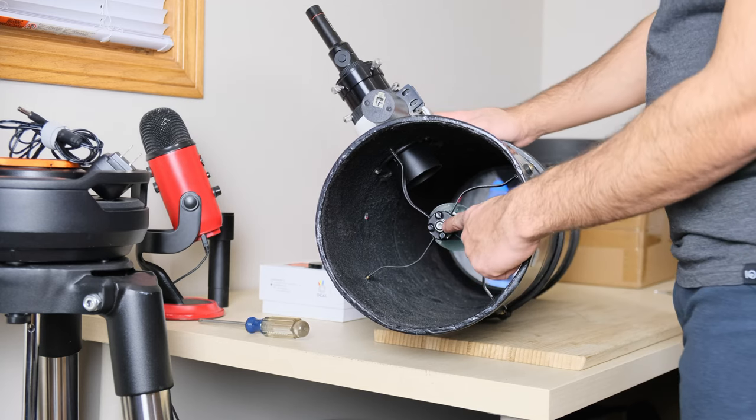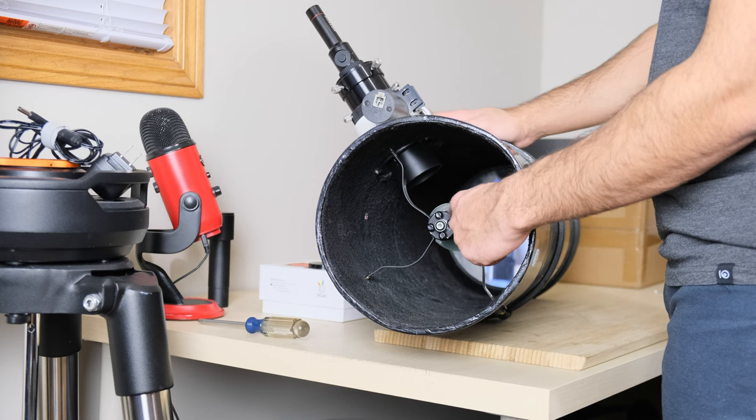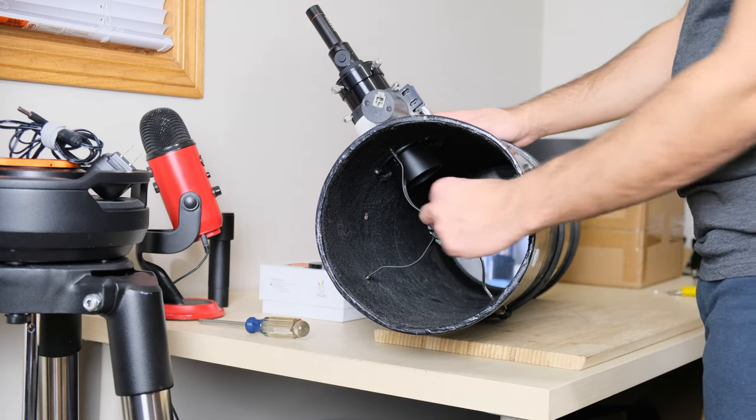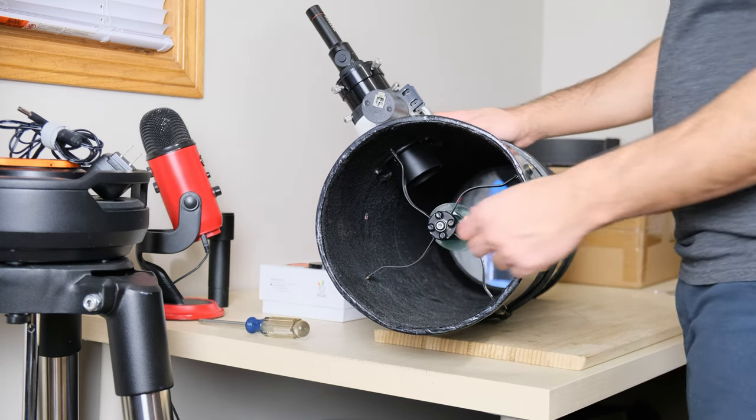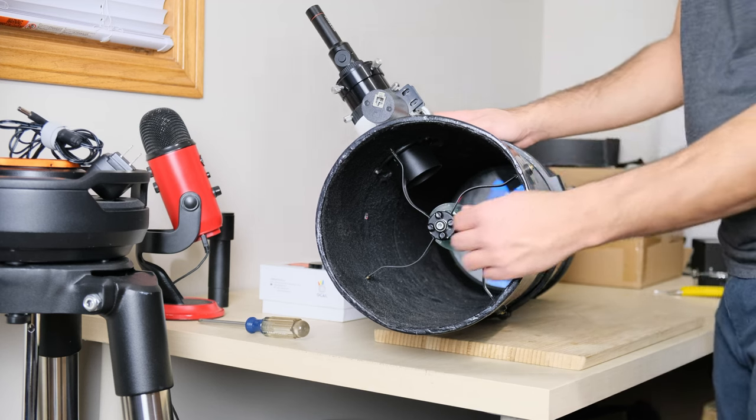But in most cases, you just loosen one and tighten the other two to move the laser dot around. As I adjust these secondary collimation screws on the outside, you can see that dot moving.